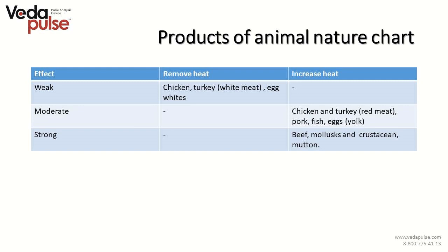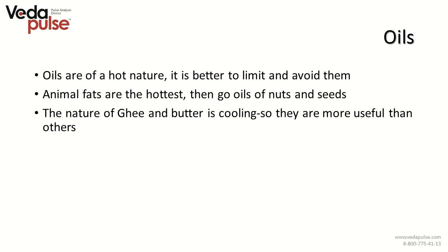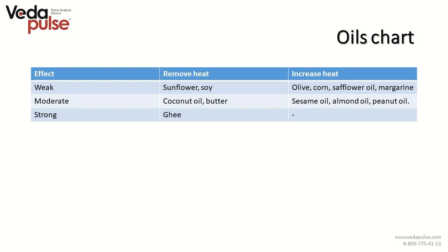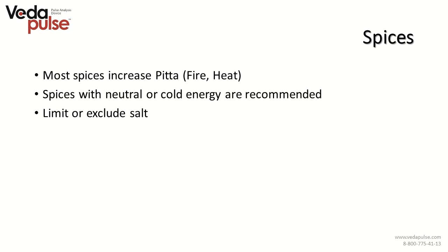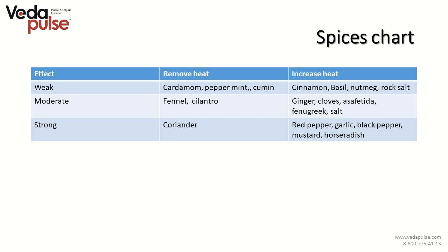Oils are of a hot nature; it is better to limit and avoid them. Animal fats are the hottest, then oils of nuts and seeds. The nature of ghee and butter is cooling, so they are more useful than others. Almost all spices increase Pitta except those of a neutral or bitter nature. Spices with neutral or cold energy are recommended for this constitution type and syndrome. One should limit or exclude salt.